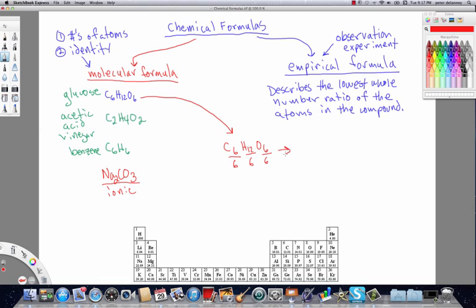And if we do that, something interesting happens because the formula is reduced to this, where now the formula is in its lowest whole number ratio. So now there's only one carbon, there's two hydrogens and one oxygen. This is the empirical formula of glucose, which I'm going to abbreviate EF.